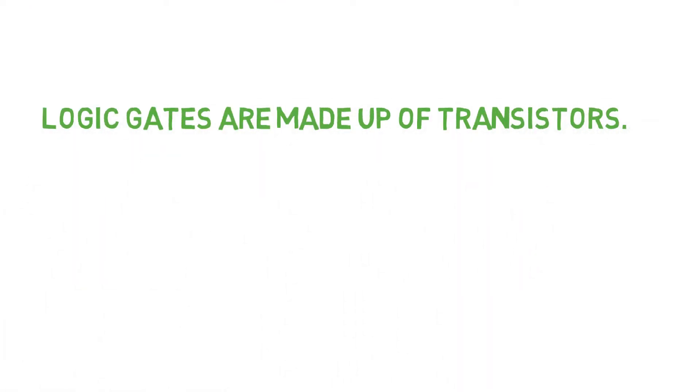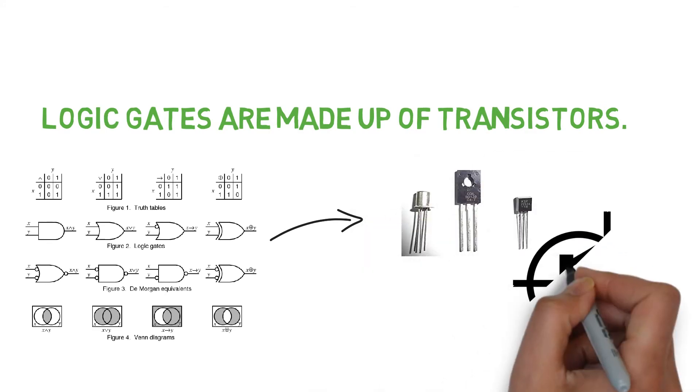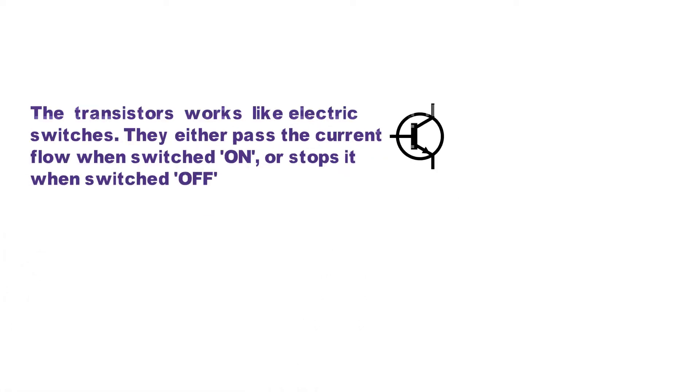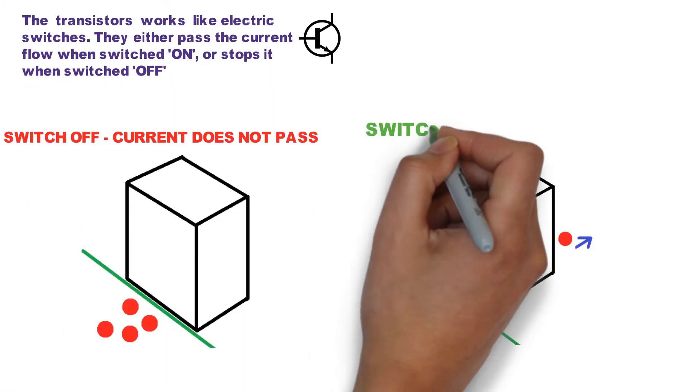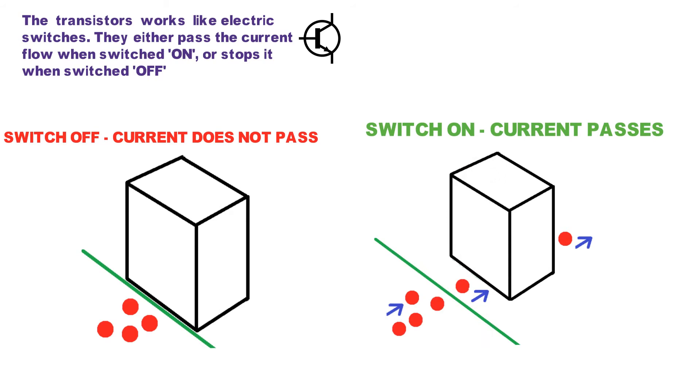The logic gates are made up of transistors. The transistors work like electric switches. They either pass the current flow when switched on or stop it when switched off.